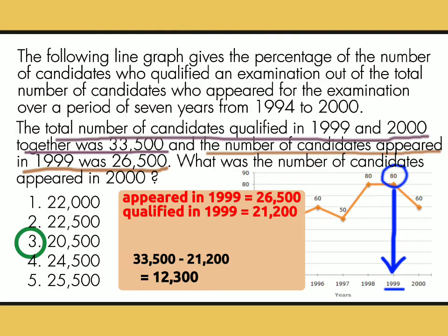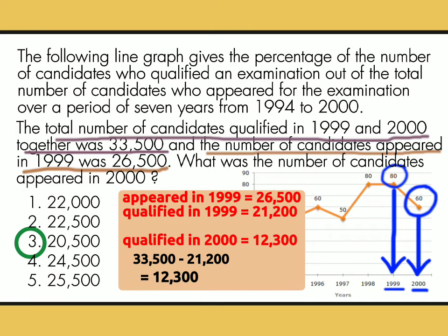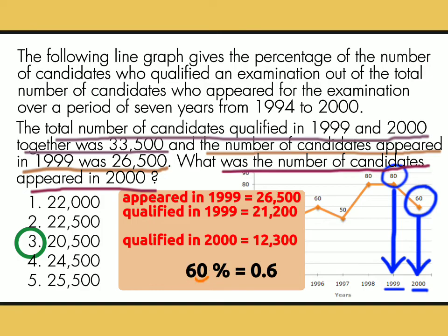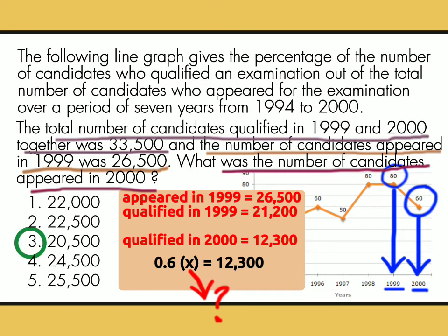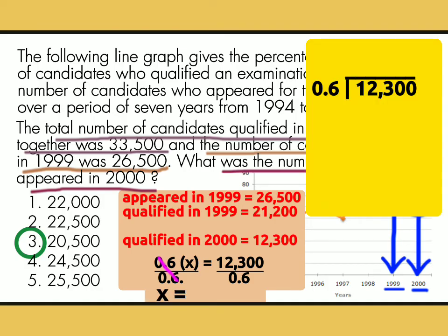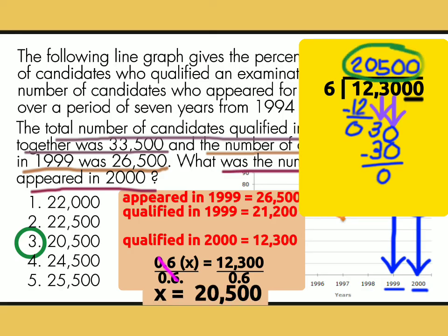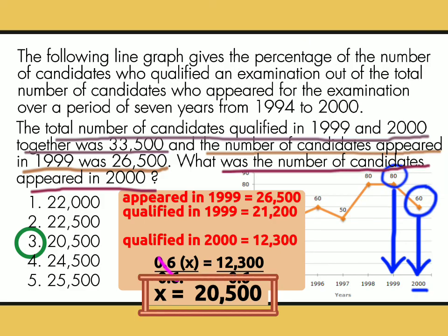Ibig sabihin, itong 12,300 ay ang 60% na qualified sa taong 2000. Ang hinahanap natin ay number of candidates appeared in 2000. Let x be the number of candidates appeared in 2000. 60% convert into decimal is 0.6. Itong 0.6 ng x na siyang hinahanap natin is equals to 12,300. Para mahanap ang value ni x, ay divide both sides by 0.6. 12,300 divided by 0.6 — move the decimal point: 6 x 2 is 12, bring down 3, cannot be so lagyan natin ng 0 sa taas, bring down 0, 6 x 5 is 30, 30 minus 30 is 0. So 12,300 divided by 0.6 is equals to 20,500. Therefore, there are 20,500 candidates appeared in 2000.